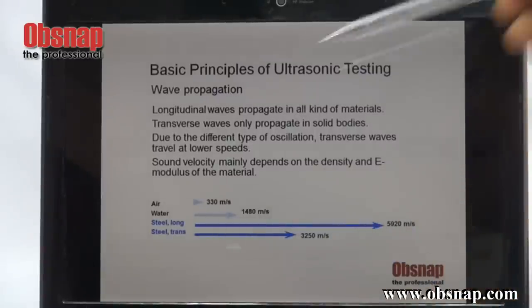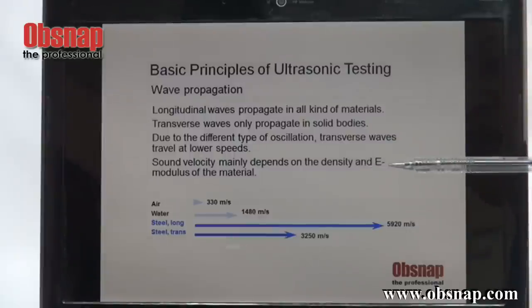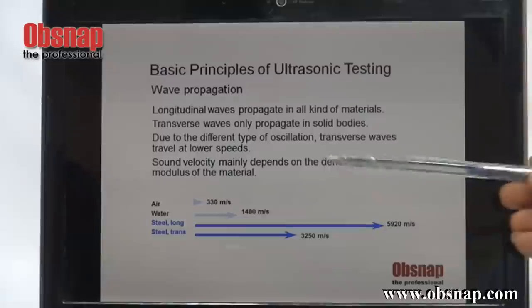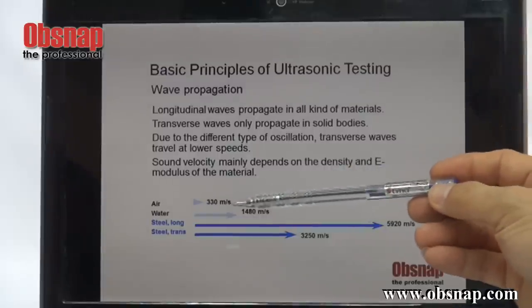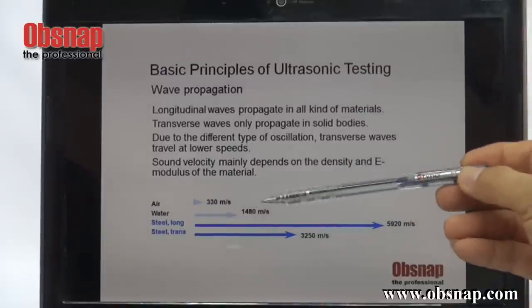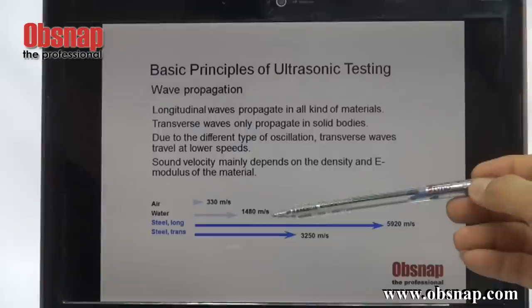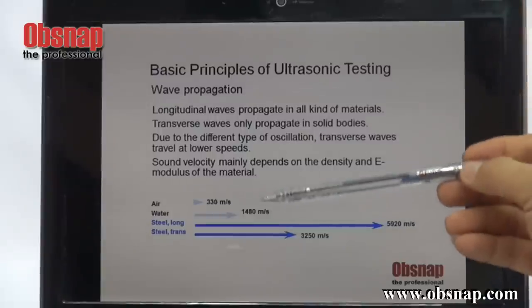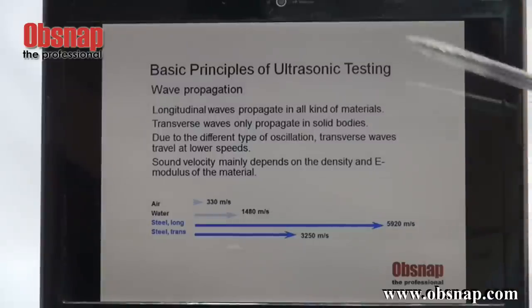Sound velocity mainly depends on the density and E-modulus of the material. Just to share: in air, sound actually travels at 330 meters per second. And in water it is 1,480 meters per second — meaning sound can also travel in water.